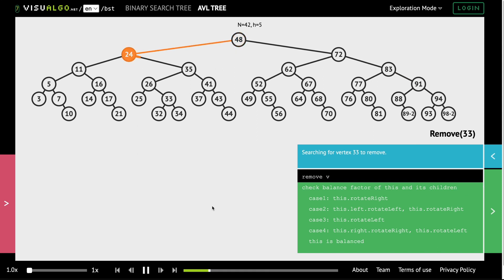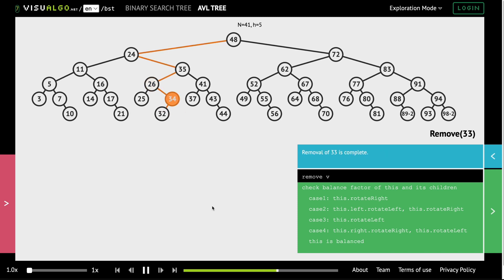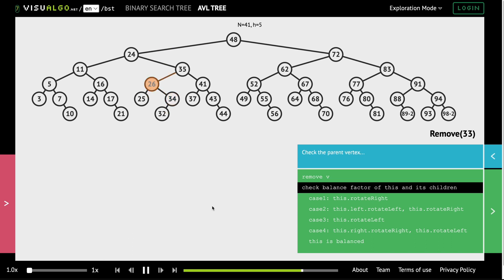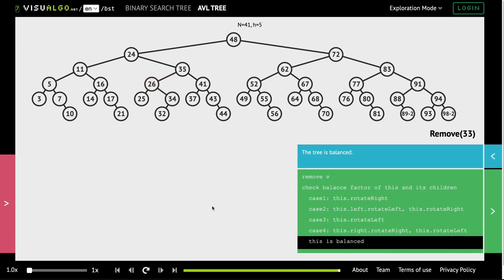For example, an AVL tree maintains a balance factor for each node which is the difference between the heights of its left and right sub-trees. If the balance factor exceeds a threshold, it performs rotation to restore the balance. So AVL tree ensures that the tree's height remains logarithmic so that we can perform efficient searching, insertion and deletion operations.